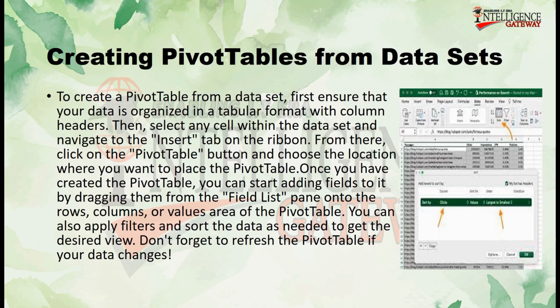To create a pivot table from a data set, first ensure that your data is organized in a tabular format with column headers. Then select any cell within the data set and navigate to the Insert tab on the ribbon. From there, click on the Pivot Table button and choose the location where you want to place the pivot table.